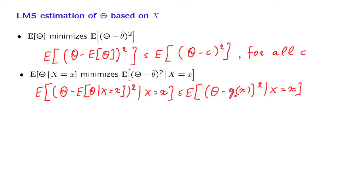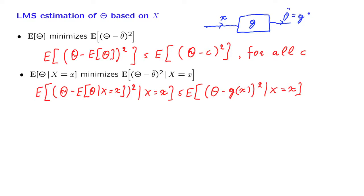So for any value g of x that we might have used, the error would have been at least as large. Why this notation g? What we have is that we are obtaining a numerical value x, we do some processing to it corresponding to some function g, and we come up with an estimate which is a function of the little x that we have observed. So no matter what estimate we use, the mean squared error is going to be at least as large as what we obtain using the conditional expectation.